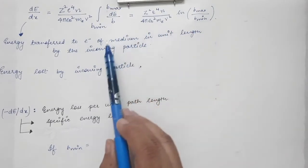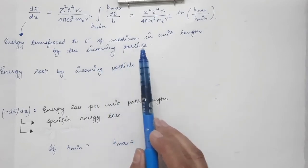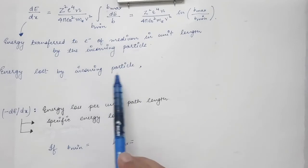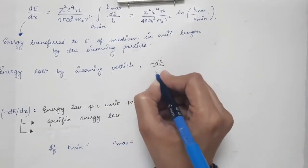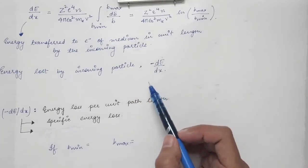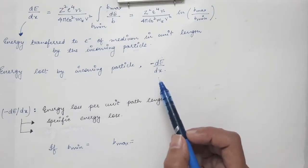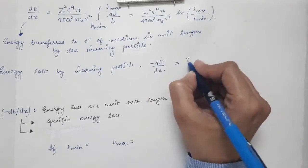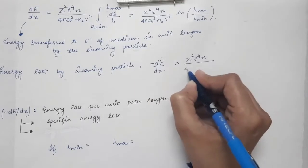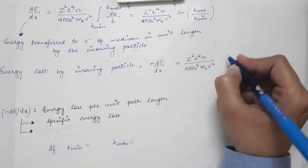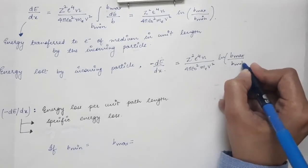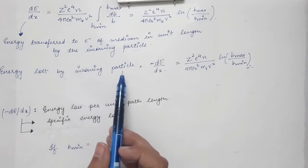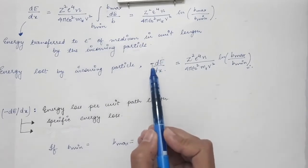Now, if energy is transferred to the electrons of the medium by the heavy charged particle, the same amount of energy will be lost by the heavy charged particle. So the energy lost by the incoming heavy charged particle is given by minus dE/dx, which equals the same expression. The energy transferred to electrons equals the energy lost by the incoming heavy charged particle, and we write a negative sign to differentiate between the two expressions.